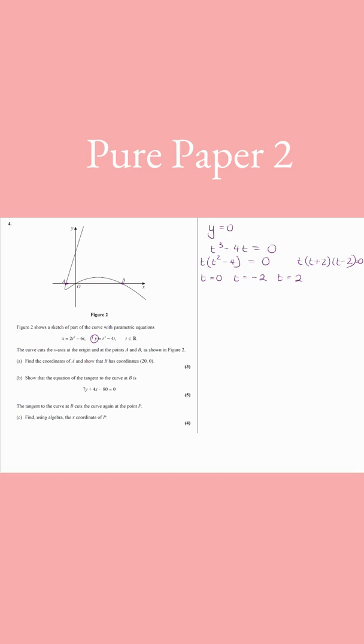Okay, so when t is 0, you can see if you put zeros in there, that's talking about this root. When t is 2, so when t equals 2, x equals 2 times 2 squared minus 6 times 2, which gives us minus 4.